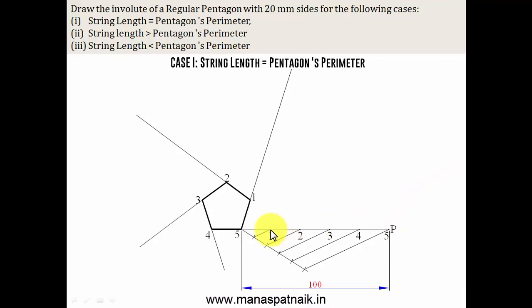Now, in order to make arcs, what we'll do is take 1P as the radius. And with 1 as the center, cut an arc. That's P1. Now, with 2P as the radius, 2 as the center, cut an arc. That's P2. With 3P as the radius, 3 as the center, cut an arc. That's P3. Now, with 4P as the radius, 4 as the center, cut an arc. That's P4.